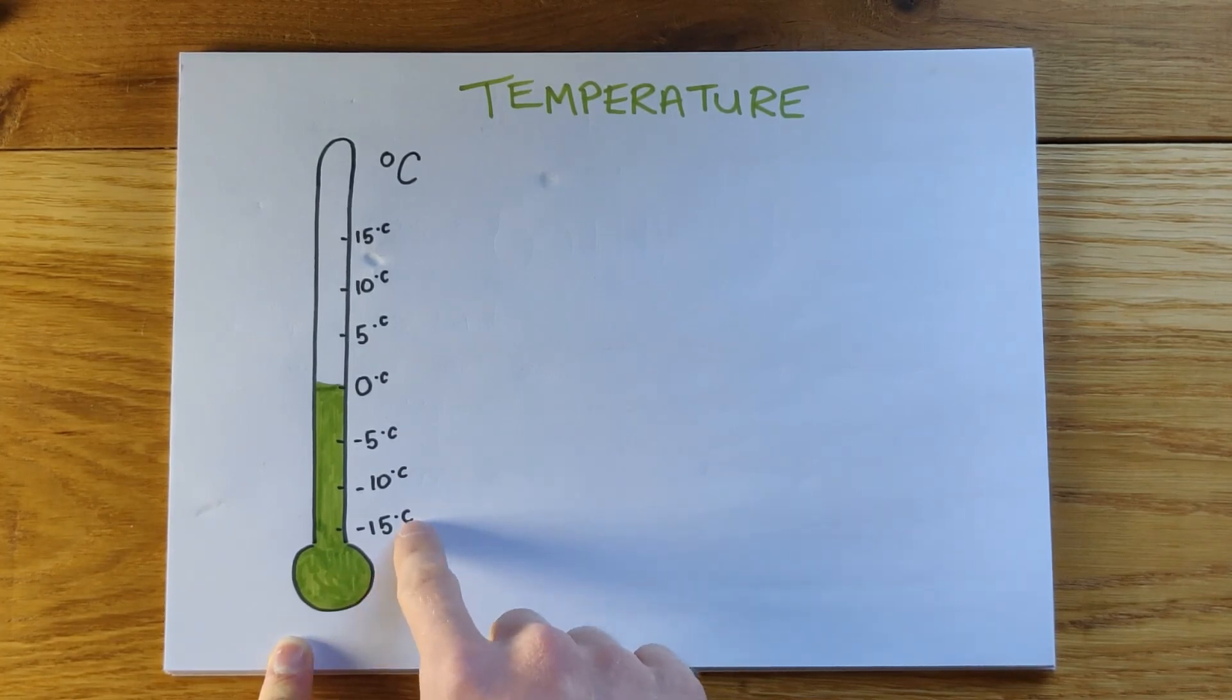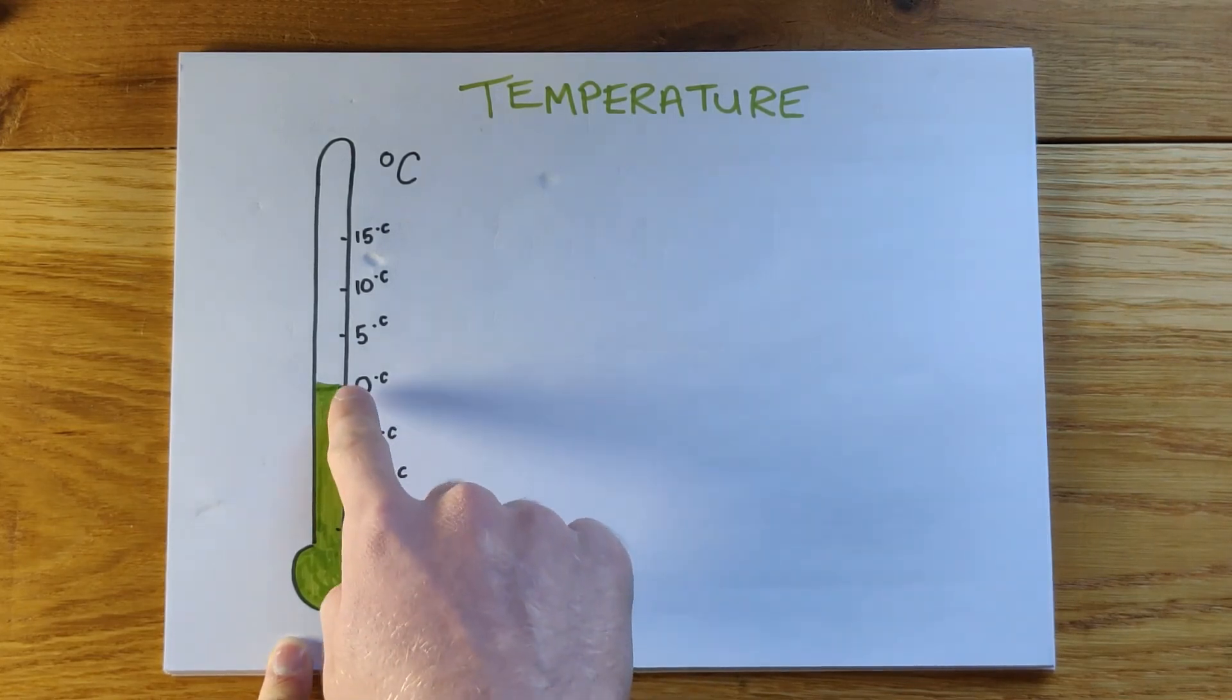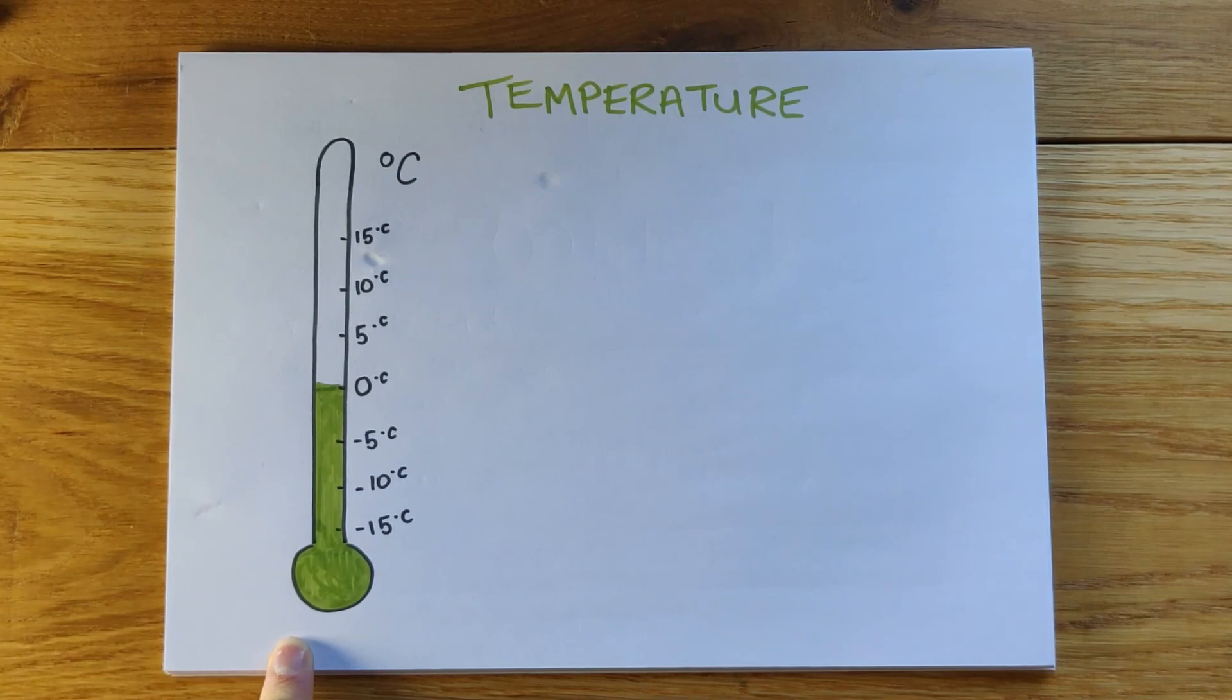So as you can see, it's important that we have these negative numbers to show temperatures that are even colder than that zero degrees, which is the temperature that water freezes at.